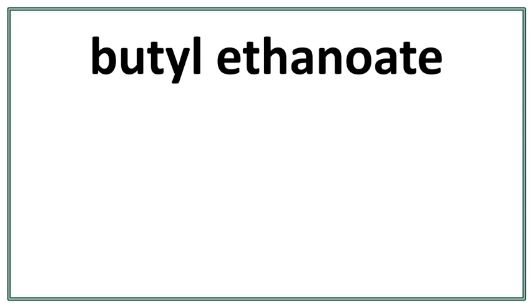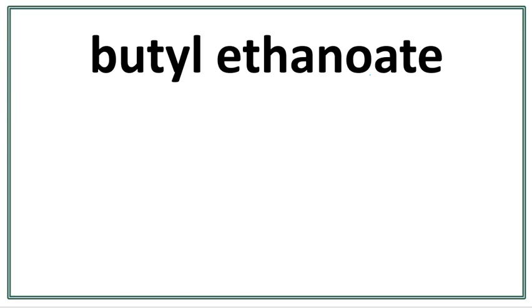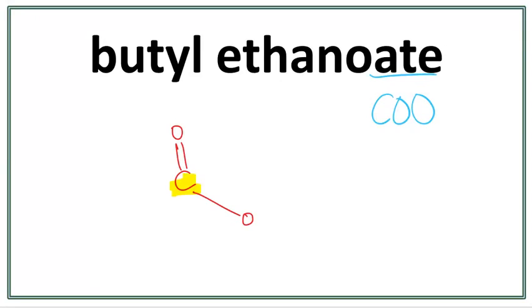Let's draw the structure for butyl ethanoate. This is an ester. An ester has two parts: one is the parent chain from the carboxylic acid, and the other is the side chain from the alcohol. The parent chain has 'ate' at the end, which means this is an ester and we have a functional group of COO. When we draw this COO, we end up with carbon having a double bond with this oxygen — the first CO right here — and carbon having a single bond with this second oxygen right here.